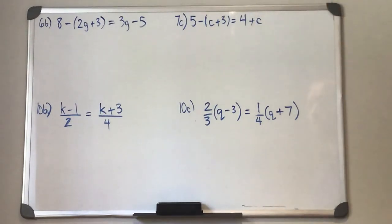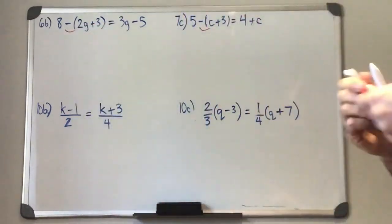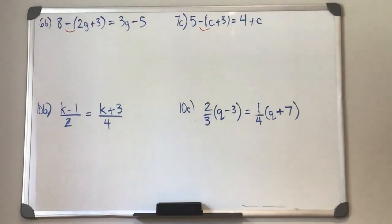Okay, starting off with the first two. I noticed that they both have something in common here. They both have a negative in front of the brackets. So I'm going to show you how to deal with that two different ways.